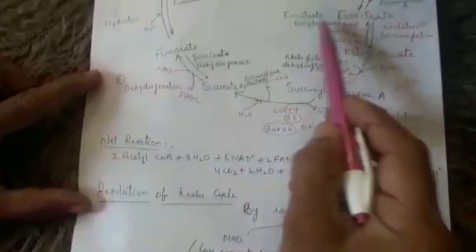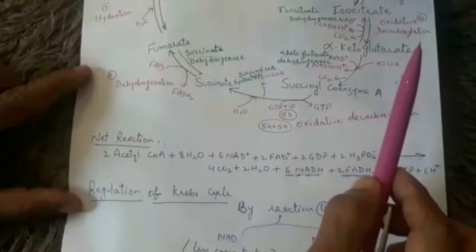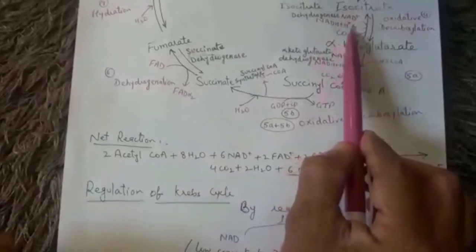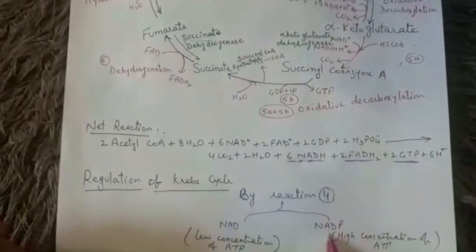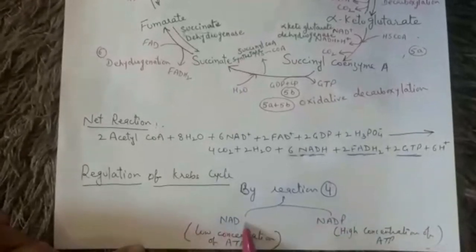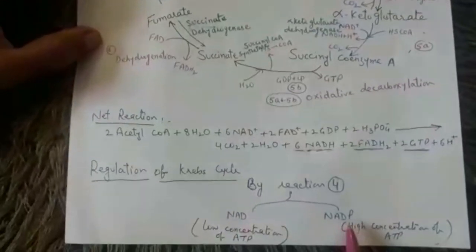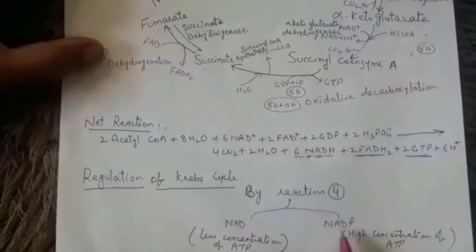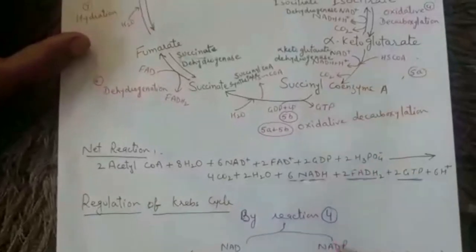This cycle is regulated by step four — the enzyme isocitrate dehydrogenase. If there is low concentration of ATP within the mitochondria, NAD is used as a coenzyme. If there is high concentration of ATP, NADP is used instead, because reduced NADH produces ATP through the electron transport chain, whereas NADP produces very low ATP within the mitochondrial matrix. This is the regulation of the Krebs cycle.